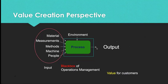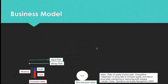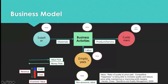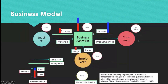We call it the black box of operations management because we want to know what differentiates excellent companies from others — what methods they use to achieve excellence. What matters most is that through this black box, the operation achieves value for customers. Looking at the business model: business consists of suppliers, customers, and employees all working together. Materials and inputs come in; products and services are supplied to customers.